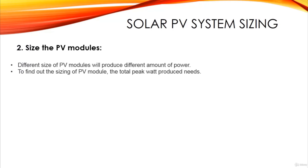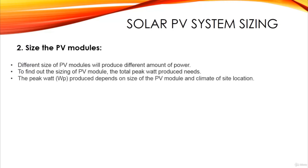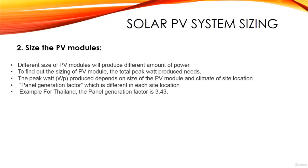In order to get the total peak watt, we will use an equation. The watt peak (Wp) produced depends on the size of the PV module and the climate of the site location. There is an important factor called the panel generation factor, which is different for each site location. For our example using Thailand, the panel generation factor is 3.43.